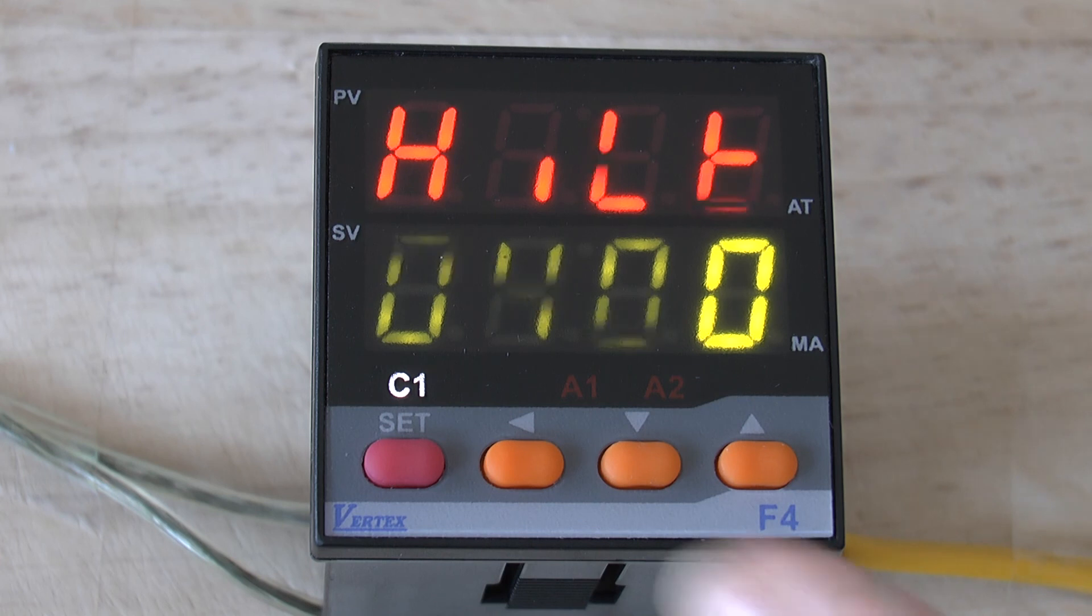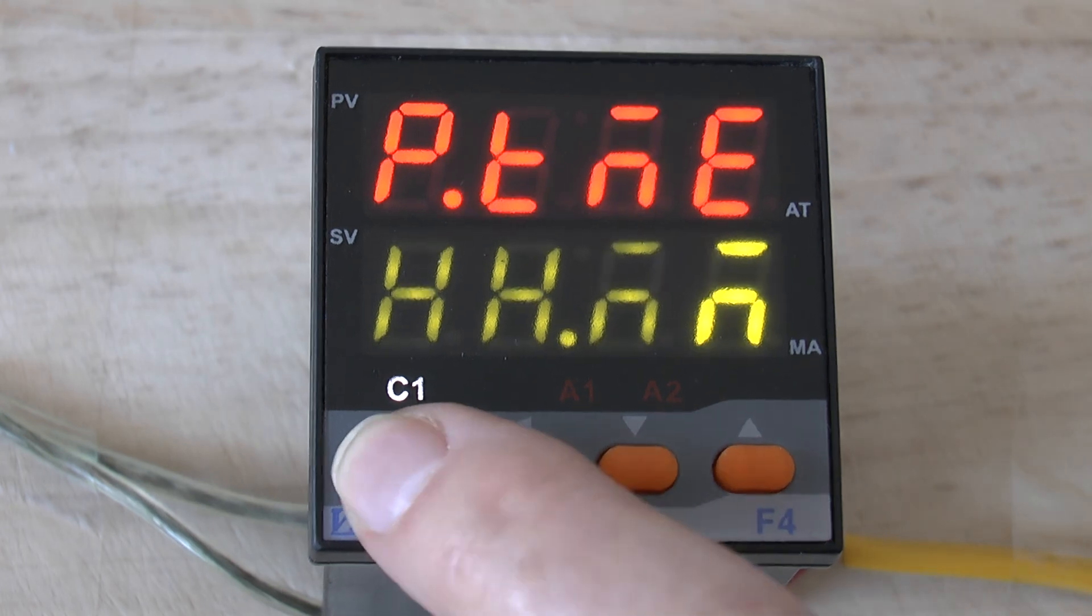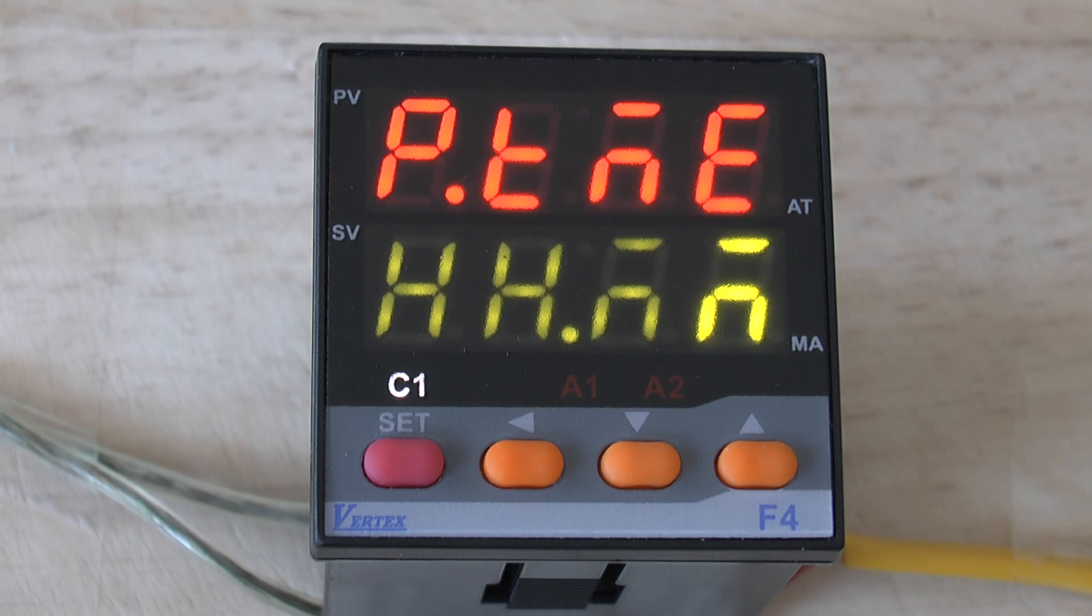The next parameter is a filter parameter and we strongly suggest that you don't adjust this parameter. The next parameter is called PTNE and is not being used on your controller.